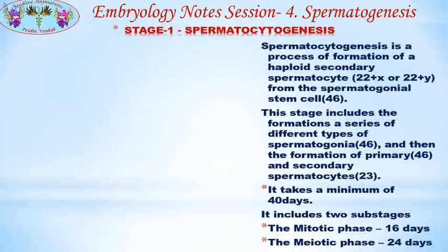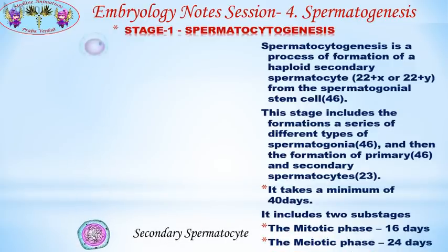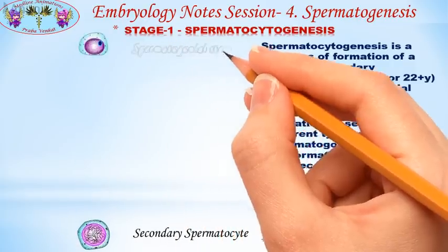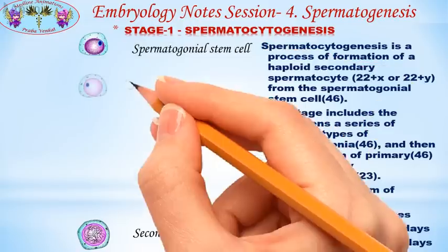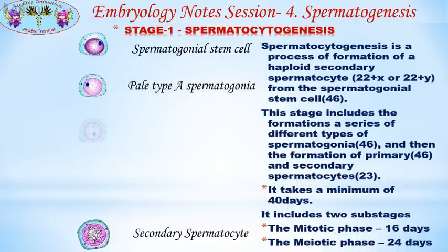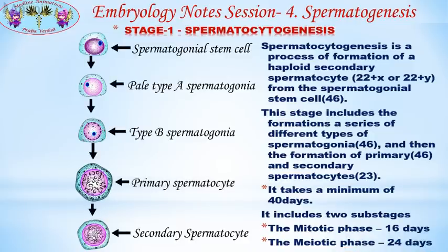Stage 1 is spermatocytogenesis — the process of formation of a haploid secondary spermatocyte from the diploid spermatogonia. This stage includes the formation of a series of different types of spermatogonia, followed by the formation of primary and secondary spermatocytes. It takes a minimum of 40 days and includes two substages.